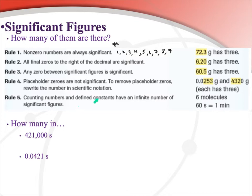Rule five: counting numbers and defined constants have an infinite number of significant figures. When talking about set or exact values — like 60 seconds is one minute, or one kilogram is exactly 1,000 grams — there's no uncertainty, because we created these values. Each of the numbers written as examples here has three significant figures, representing the digits we know are correct.